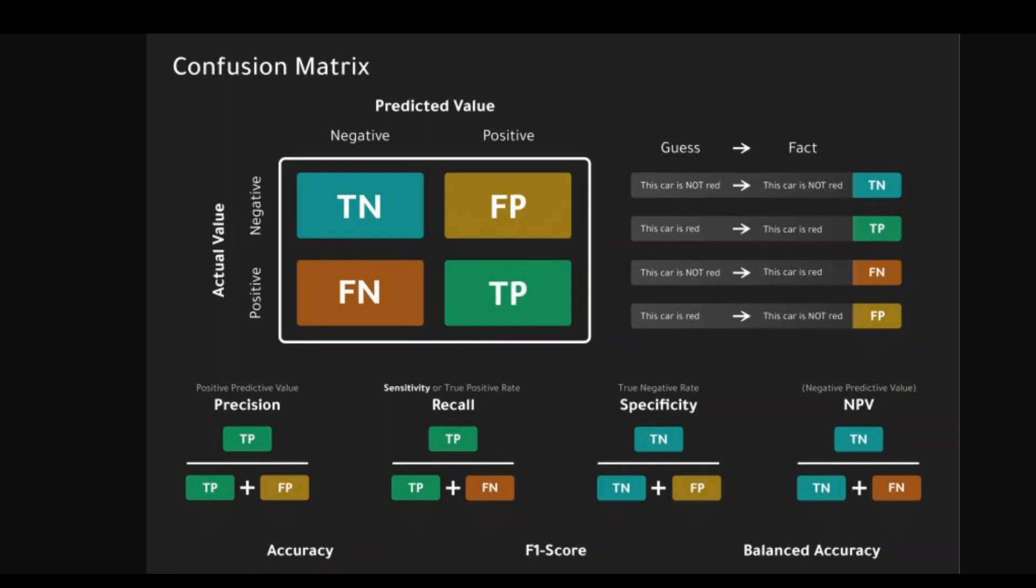True positives are the cases where the model correctly predicts the positive class. True negatives are the cases where the model correctly predicts the negative class. False positives are the cases where the model incorrectly predicts the positive class. And false negatives are the cases where the model incorrectly predicts the negative class.